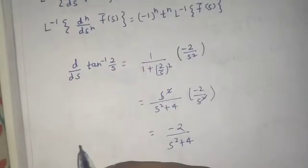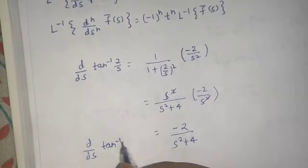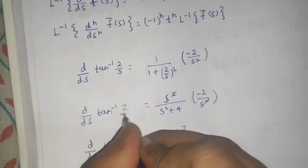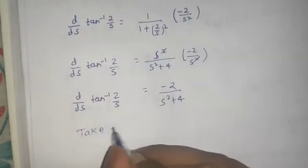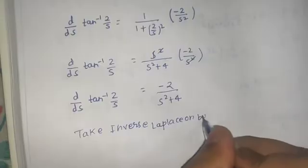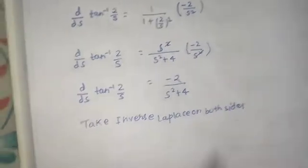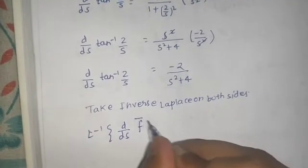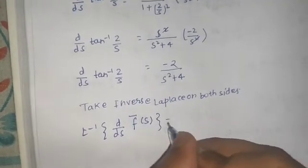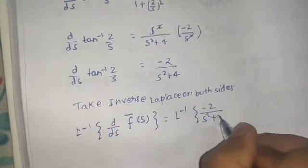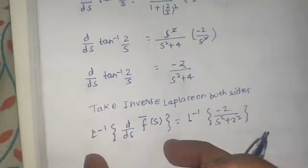So this was d by ds of tan inverse 2 by s. Now we take inverse Laplace on both sides. We get Laplace inverse of d by ds of f bar s, which equals Laplace inverse of minus 2 by s square plus 4, which I can write as 2 squared. Here I can use the formula — since this is the first derivative, minus t will be in multiplication.